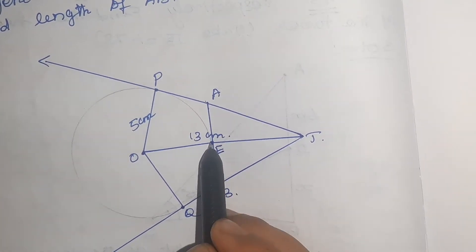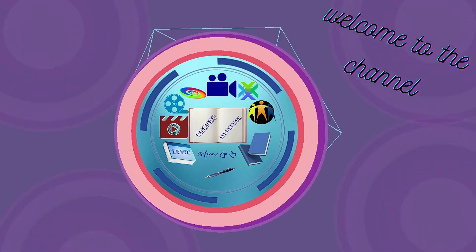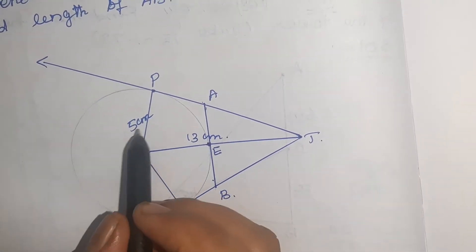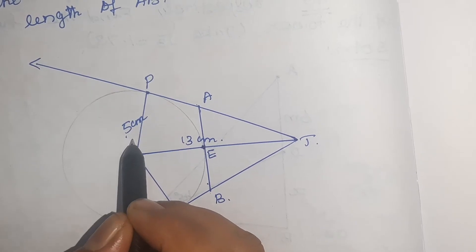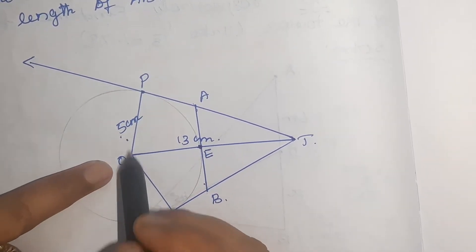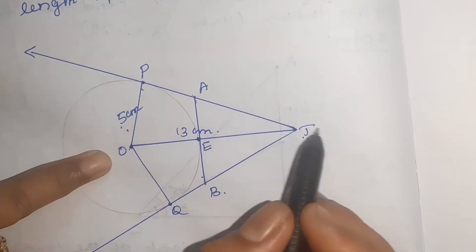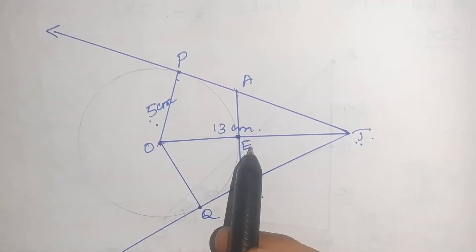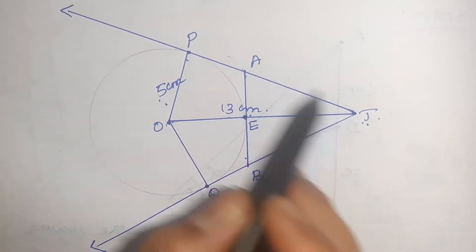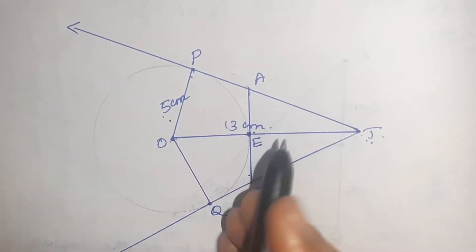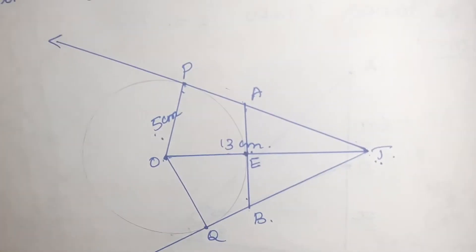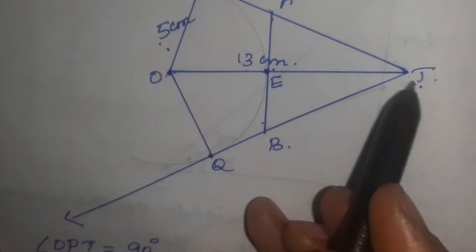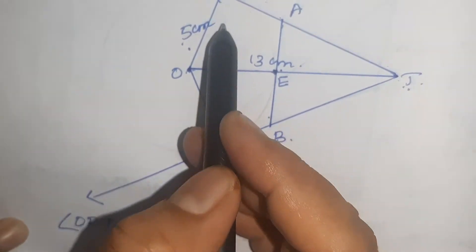First we have to find AE. So, what is given? OP is 5 centimetre. Radius is 5 centimetre and T is the external point. These are two tangents. OE equal to, OT equal to 13 centimetre. Here angle OPT equal to 90 degree, because this is a circle, this is a point of contact, this is the external point. Therefore, angle OPT equal to 90 degree.